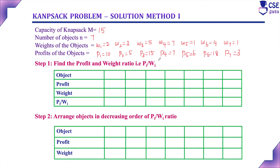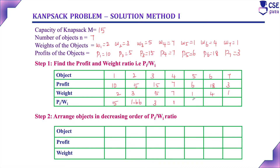The first step is to find the profit-to-weight ratio, that is Pi divided by Wi, for all 7 objects. The ratios are: P1/W1 = 10/2 = 5, P2/W2 = 5/3 = 1.66, P3/W3 = 15/5 = 3, P4/W4 = 7/7 = 1, P5/W5 = 6/1 = 6, P6/W6 = 18/4 = 4.5, and P7/W7 = 3/1 = 3. This profit-to-weight ratio tells us which object will help get the maximum profit.